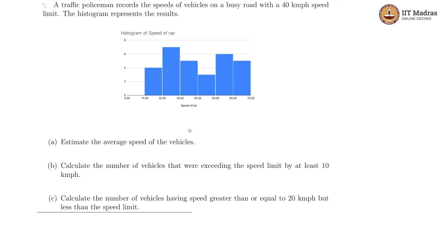This is our question number 1. A traffic policeman records the speeds of vehicles on a busy road with a 40 kilometer per hour speed limit. The histogram of this data is shown here. This is the histogram of speeds of cars and this is the actual speed. These are the number of vehicles in that class of speeds.